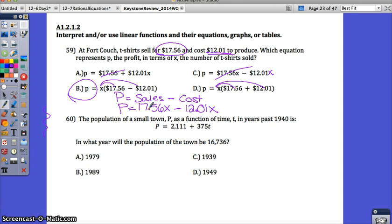Number 60: The population of a small town, P, as a function of time, T, in years past 1940 is P = 2.111 + .075t. P is the population, and T is the time since 1940. That's going to be really important. In what year will the population be 16,736? Since population is P, all I'm going to do is put in 16.736 for P.